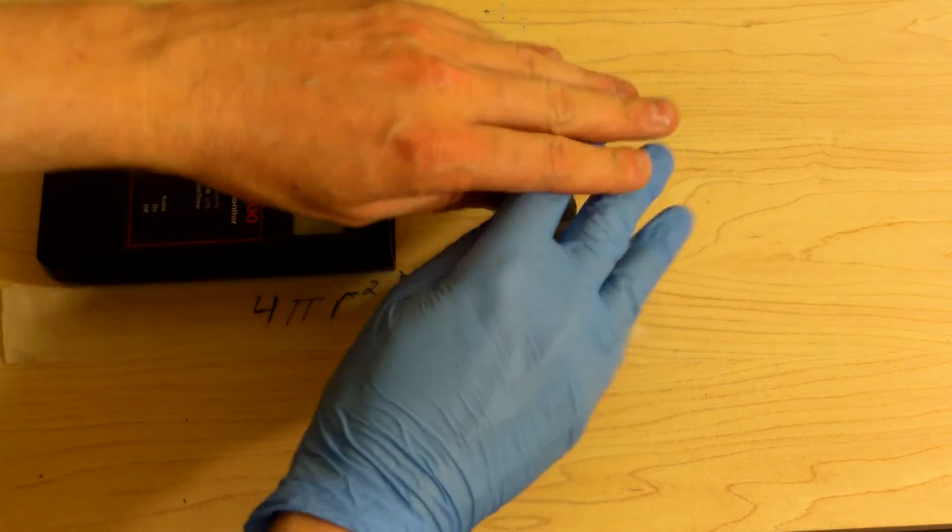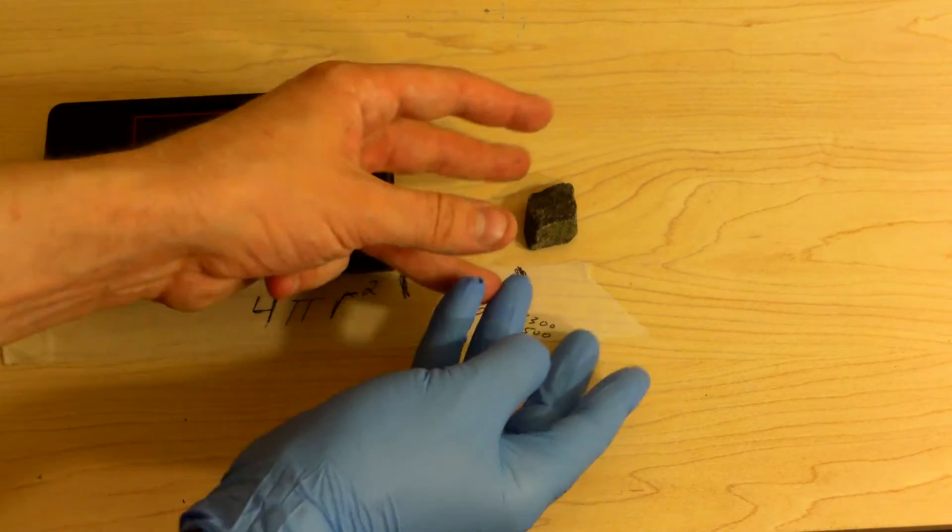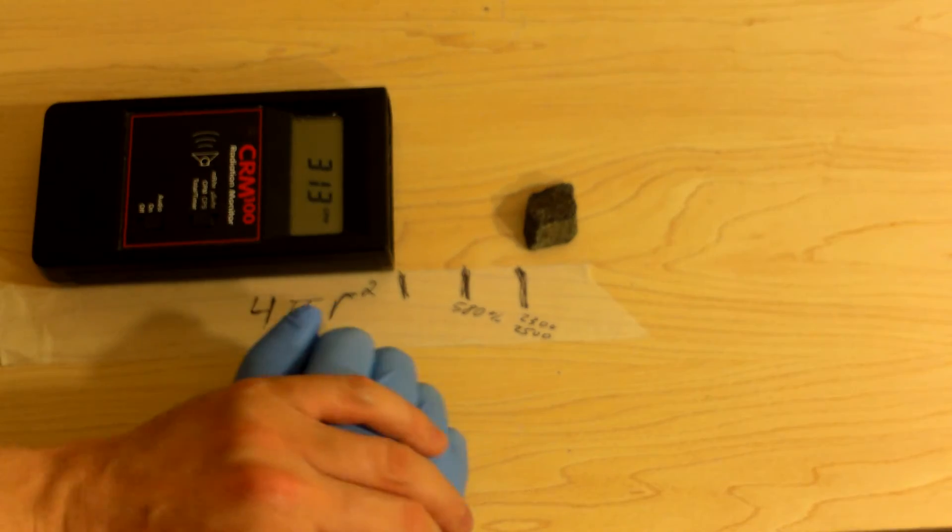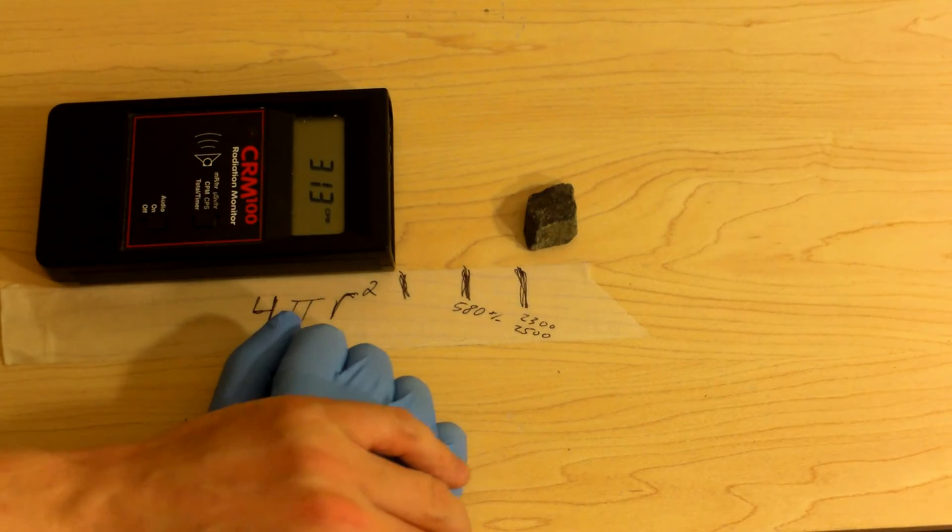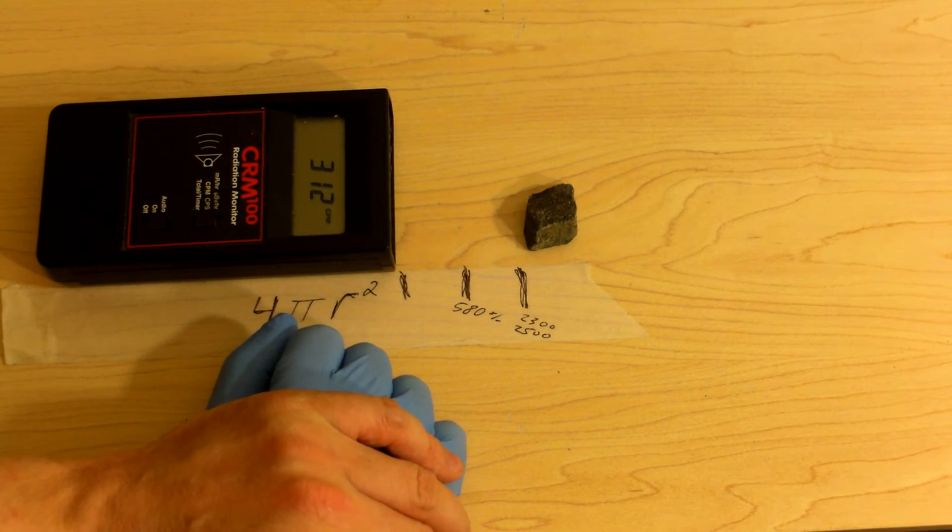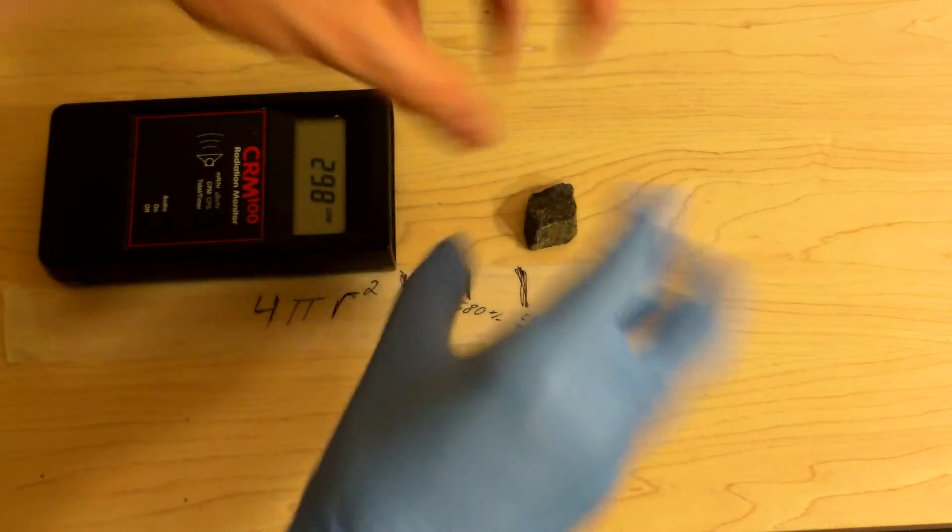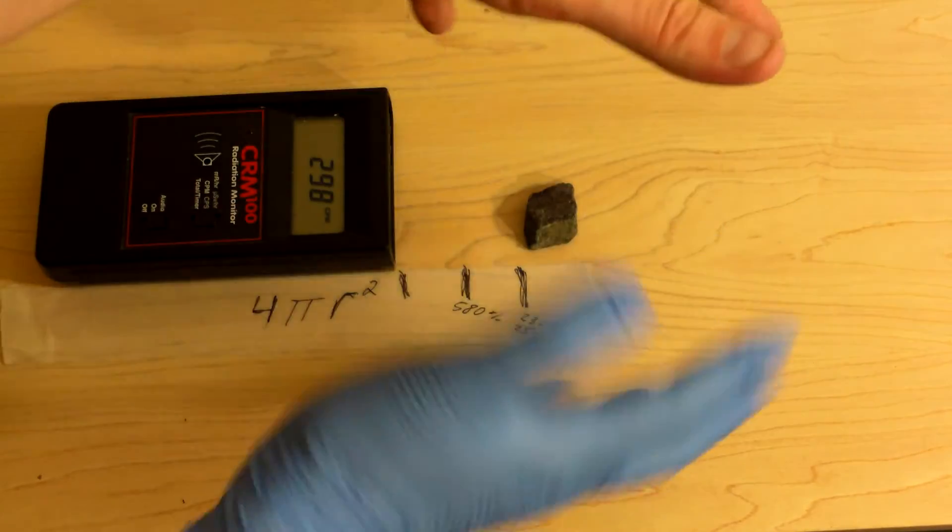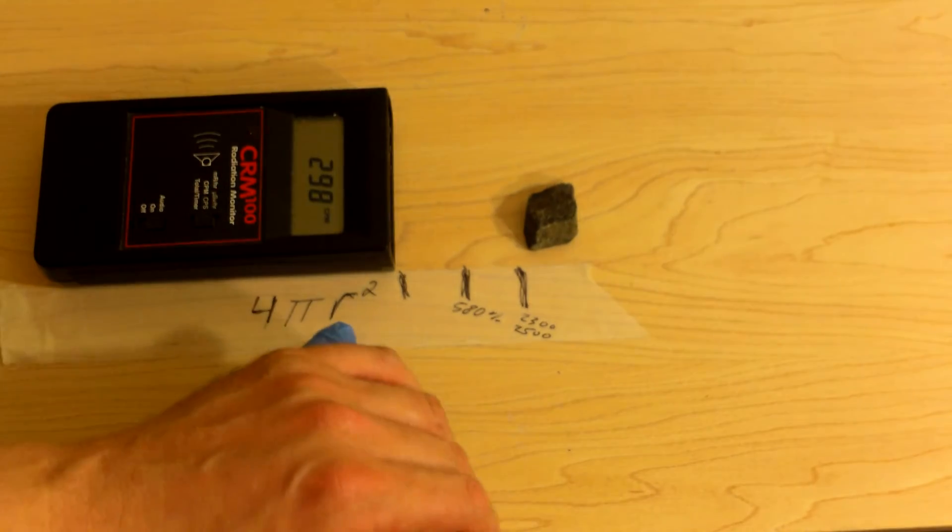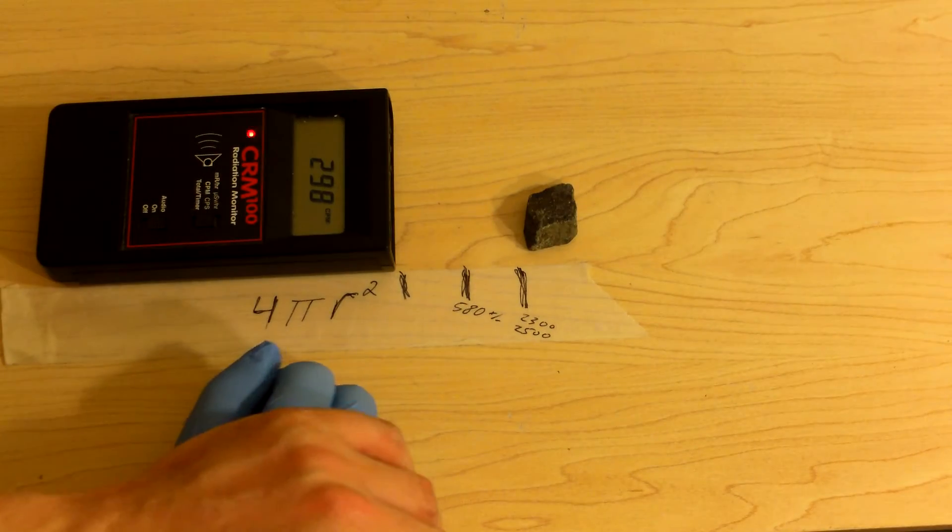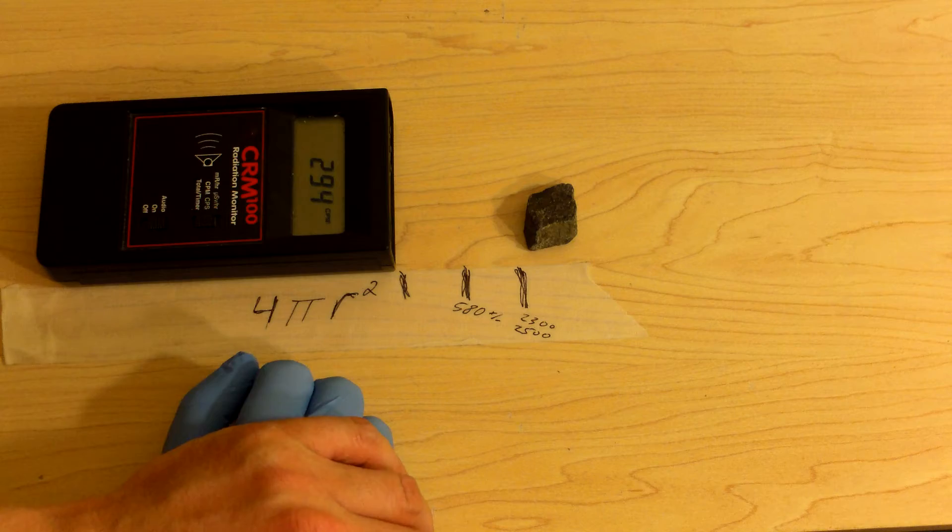this sphere around this little sample would have a surface area of about 12 inches square. That means a thousand photons coming out would be divided amongst that whole 12.5 inches. So, you're going to get maybe what, 80 photons per square inch or something like that.